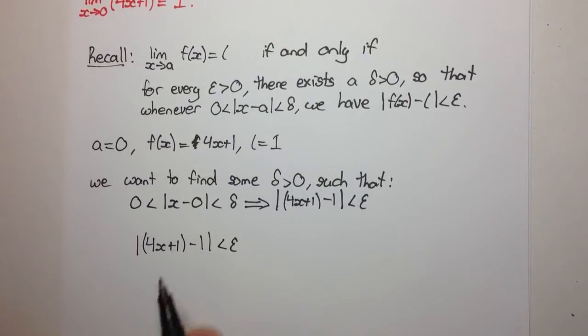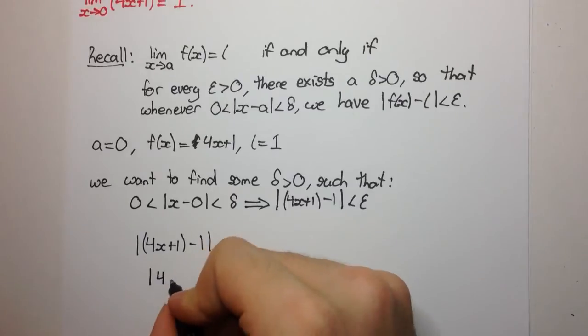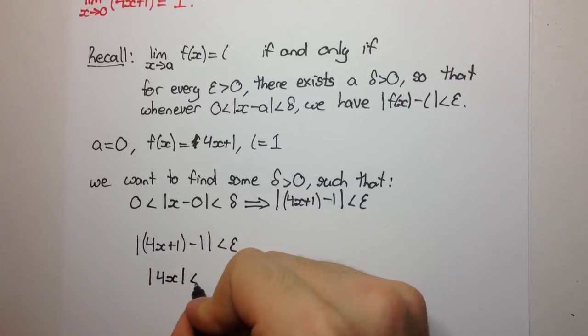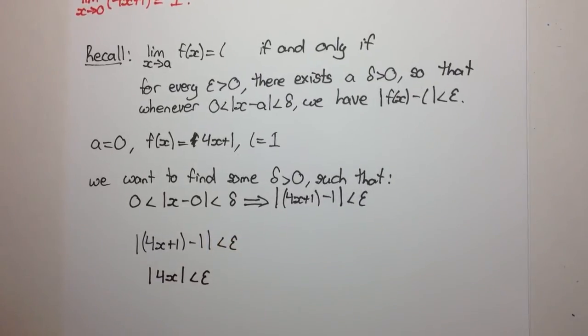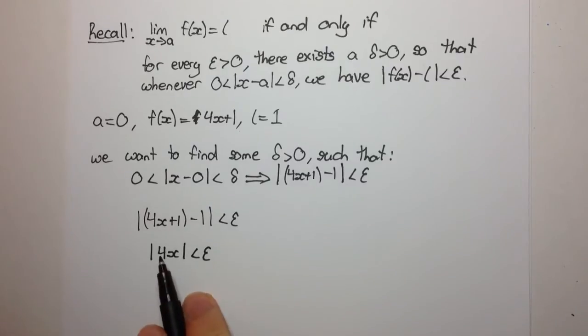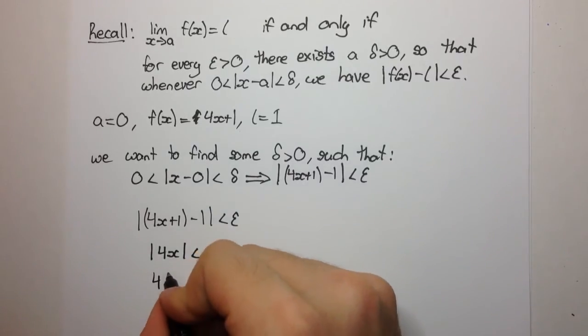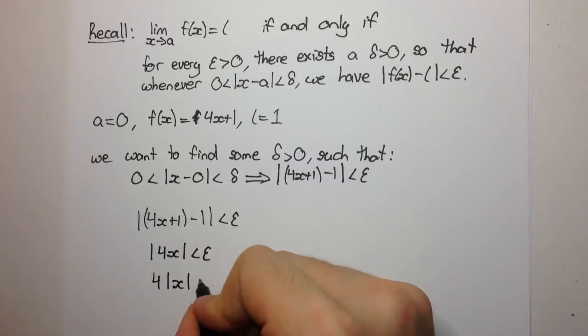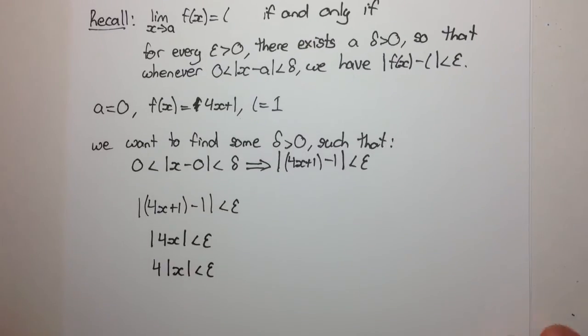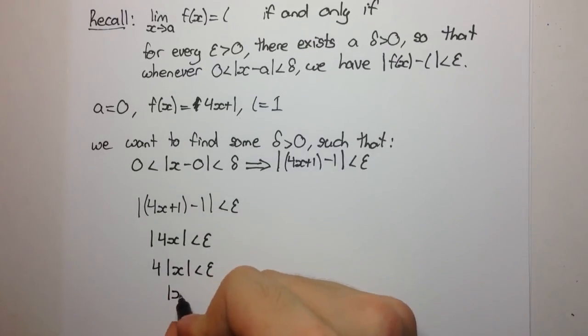Okay now let's go ahead and simplify what's inside these absolute values. Obviously this 1 and minus 1 will cancel and we'll be left with the absolute value of 4x is less than epsilon. We can take the 4 outside of the absolute value and we're going to get 4 times the absolute value of x is less than epsilon. And we can divide both sides by 4 and we get the absolute value of x is less than epsilon on 4.